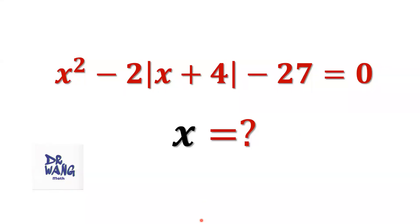Hello, everyone. I'm Dr. Wen. Here is the question: x squared minus 2 times absolute value of x plus 4 minus 27 equals 0. What is the x value?